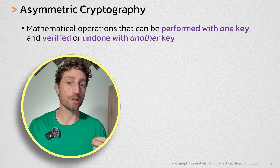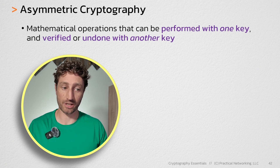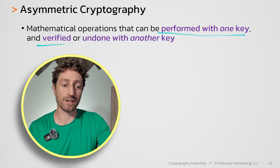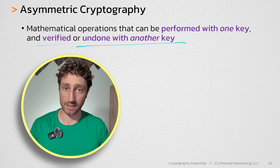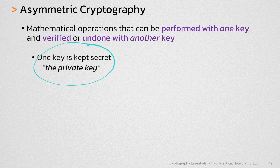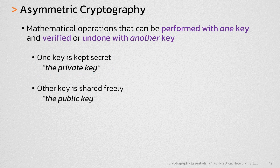Asymmetric cryptography is a set of mathematical operations that can be performed with one key and either verified or undone with another key. Generally, with asymmetric cryptography, one of those keys is going to be kept secret and not shared with anybody — we'll refer to that key as the private key. The other key will be shared with anybody that wants it, and that key will be referred to as the public key.